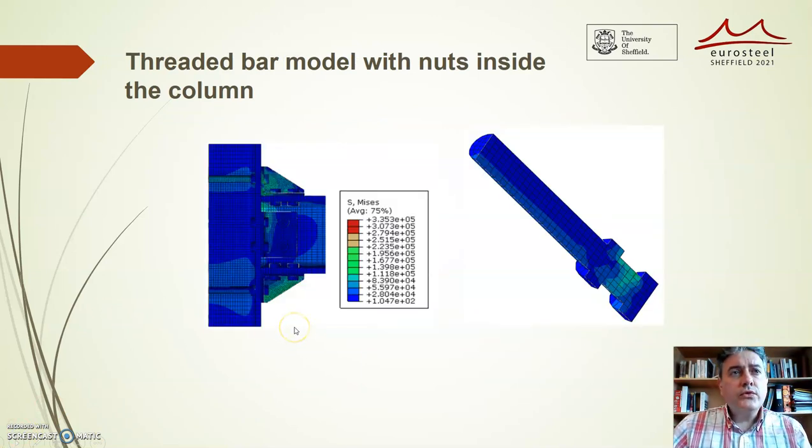The figure shows the von Mises stress in a threaded bar model with nuts inside the column. Tension stresses in the column web slightly increase, but the compressions in the panel decrease comparing with the previous model without nuts inside the column.